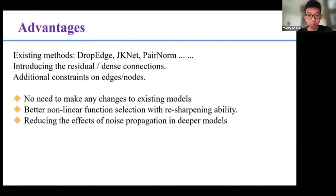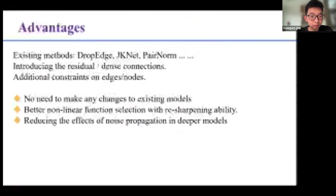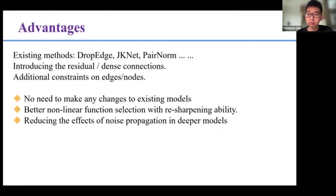There are also some existing methods that address the over-smoothing problem, such as DropEdge, GCNII, and PairNorm. They introduce the residual connections or take additional constraints on edge or nodes to solve it. While our flexible inflation approach does not need to make any changes to the existing models, it can resharpen the representation and reduce the effect of noise.